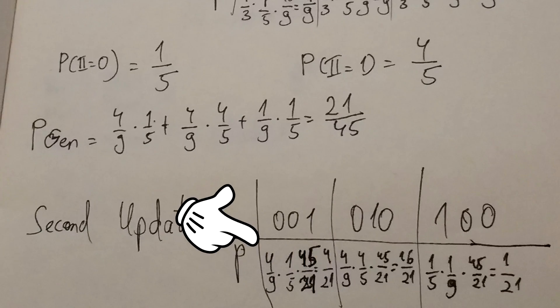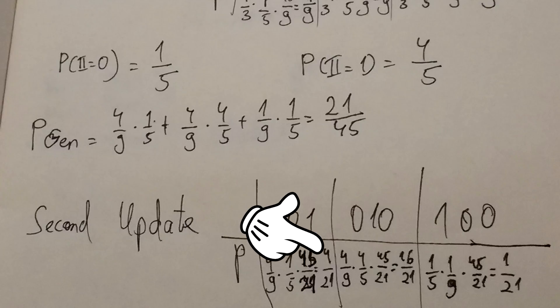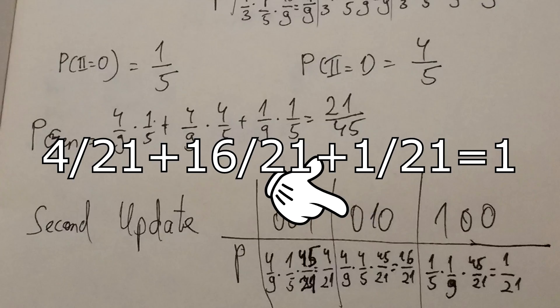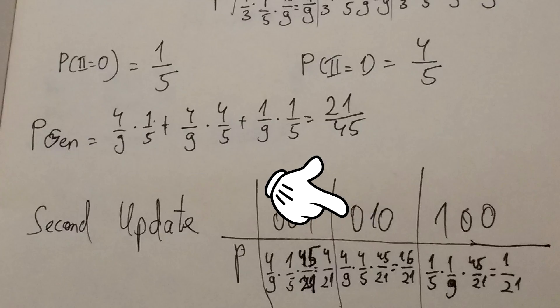We plug that in a new table, which is update two. After multiplying the results from the top table times the probability of getting either one or zero, as is relevant, times the probability of getting these results, we get four over twenty-one, sixteen over twenty-one, and one over twenty-one. Again, the sum equals one, and it makes sense that 010 is the most likely one, as the zero and the one match the queries.